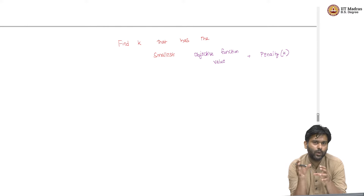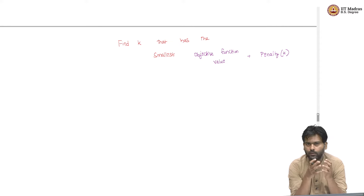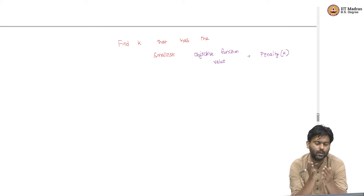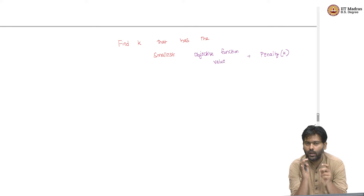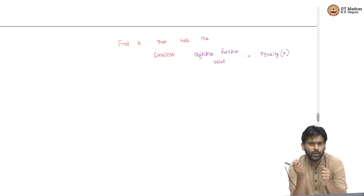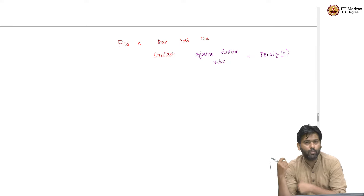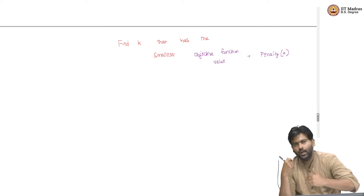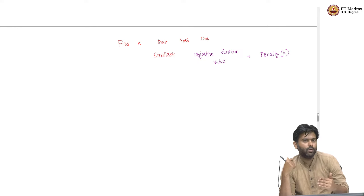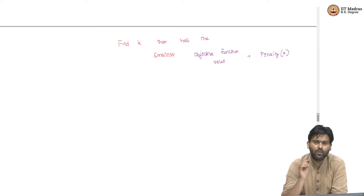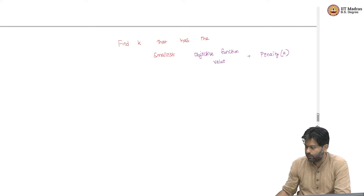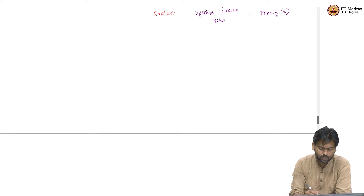For example, if you start with K equals 1, the objective function might be really large because all points are treated as a single cluster. The moment I make one extra cluster, I pay something, but that payment is worth it because the reduction in the objective function is large. But as I keep adding more and more clusters, I have to pay more and more, and the amount of decrease in the objective function is not going to be as much. So there is going to be a balance struck at some choice of K. If you want to think of this as a plot, the x-axis is K from 1 to n.